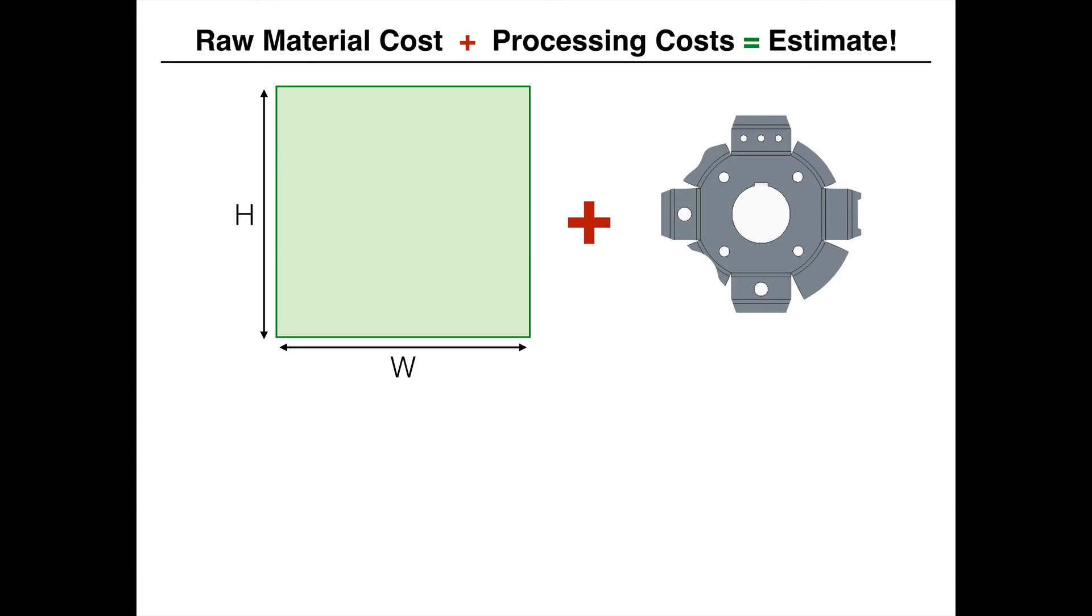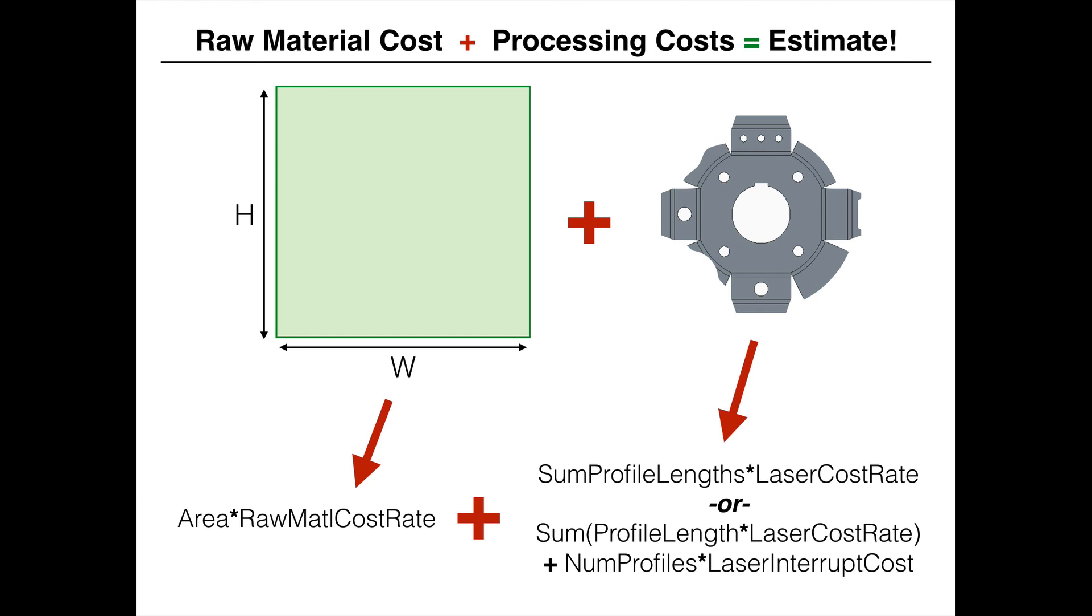The raw material costs plus the processing costs equal your estimate. So the math for this is very simple. It could be done in Excel. And all you're basically doing is just extracting data from the CREO model and then combining it to come up with your estimates.